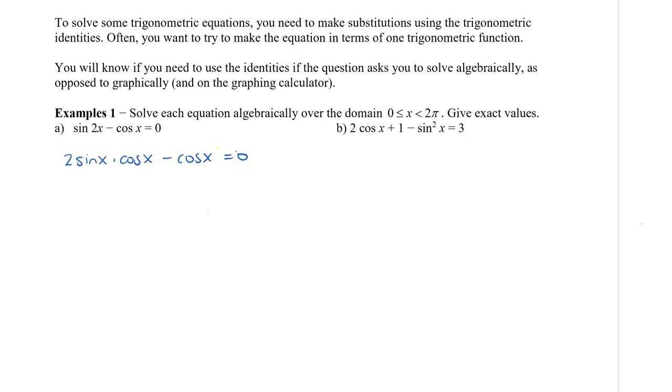Now in this question here, we don't want to change the cos x to sin x or sin x to cos x. Actually, it's very difficult to do this. So what we're going to do is factor out a cos x because I can see both of them, both terms have a cos x. And when I do this, I get 2sin x minus 1 equal to 0.